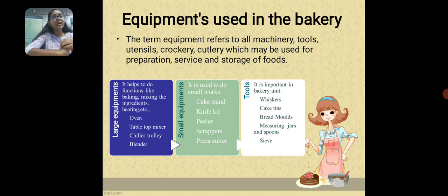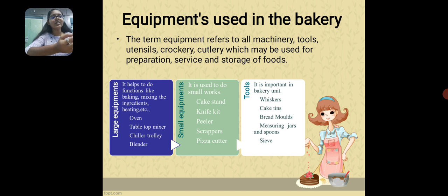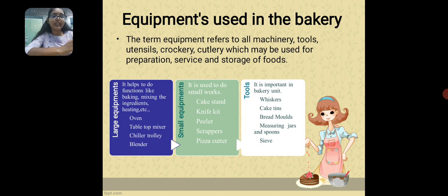Let's see about the equipment used in the bakery. Equipment refers to machinery, tools, utensils, crockery and cutlery which are helpful in the preparation, service and storage of goods. There are three types of equipment: large equipment, small equipment and tools. Large equipment is helpful in doing the major functions like blending, heating, baking, etc.